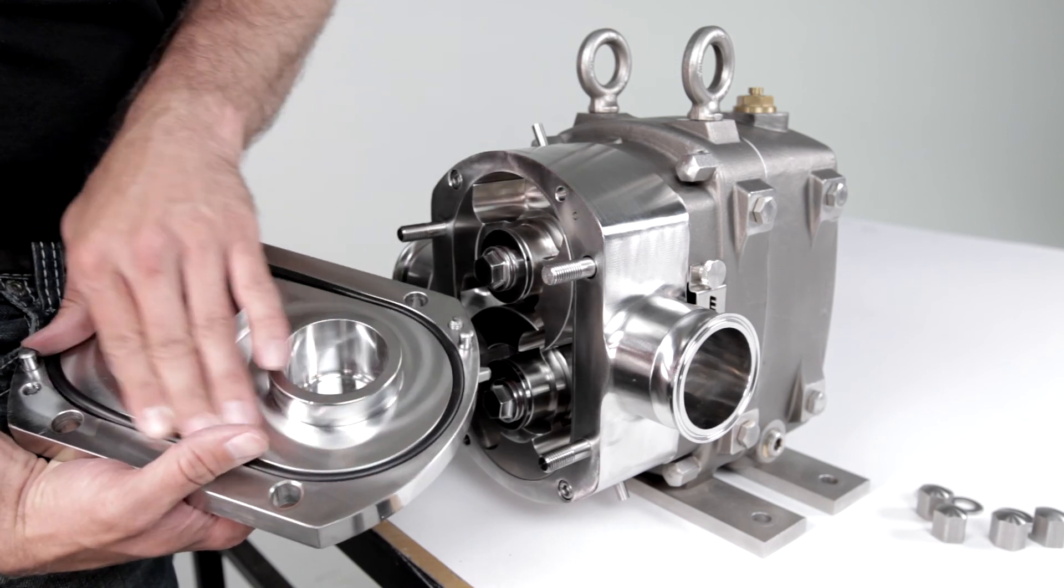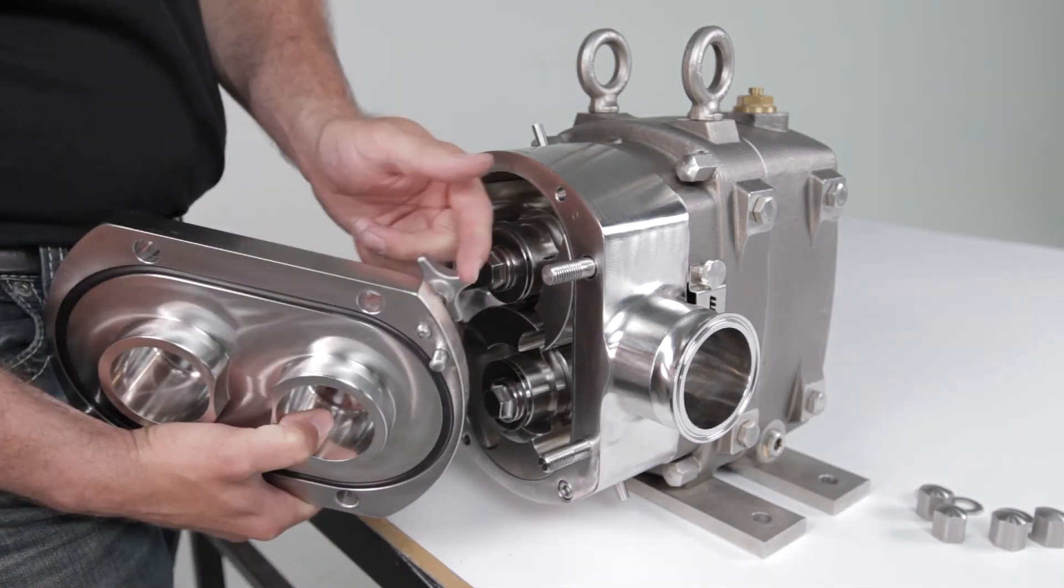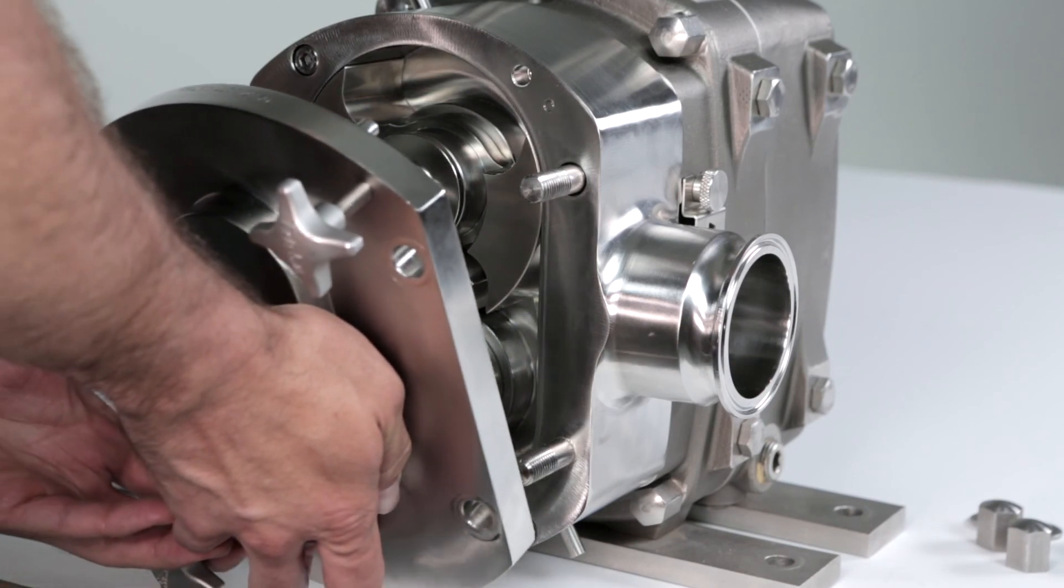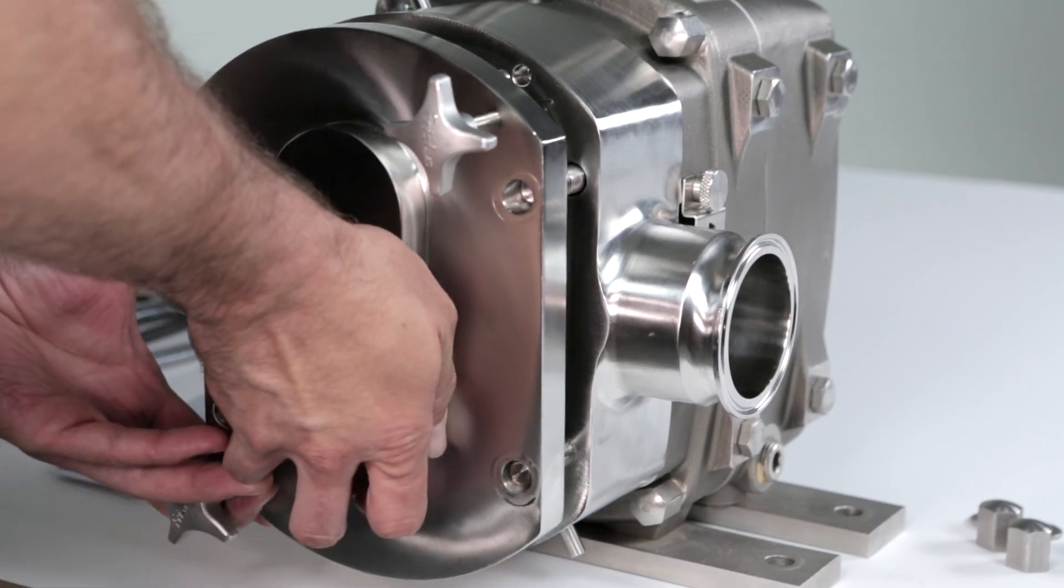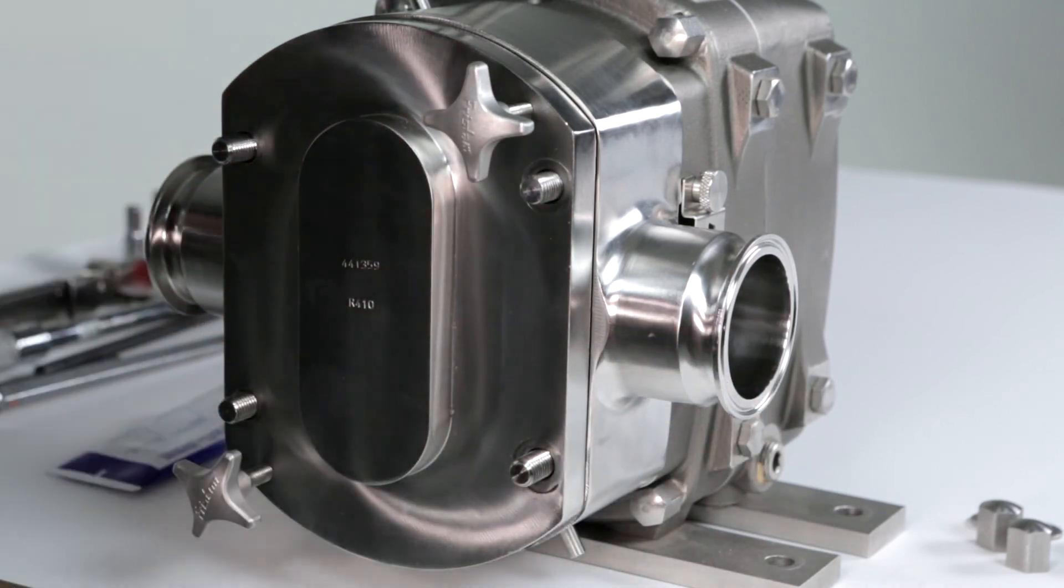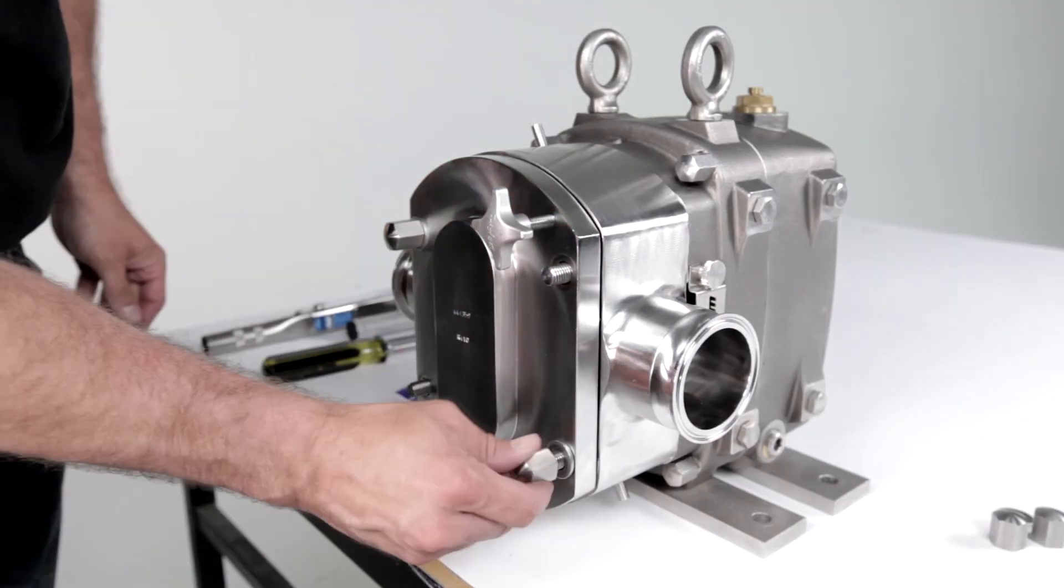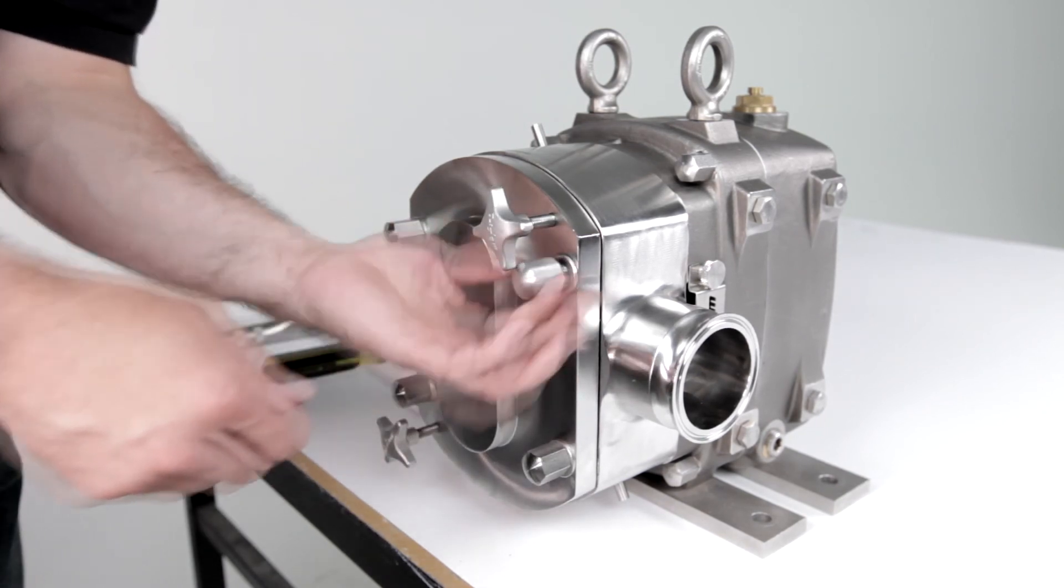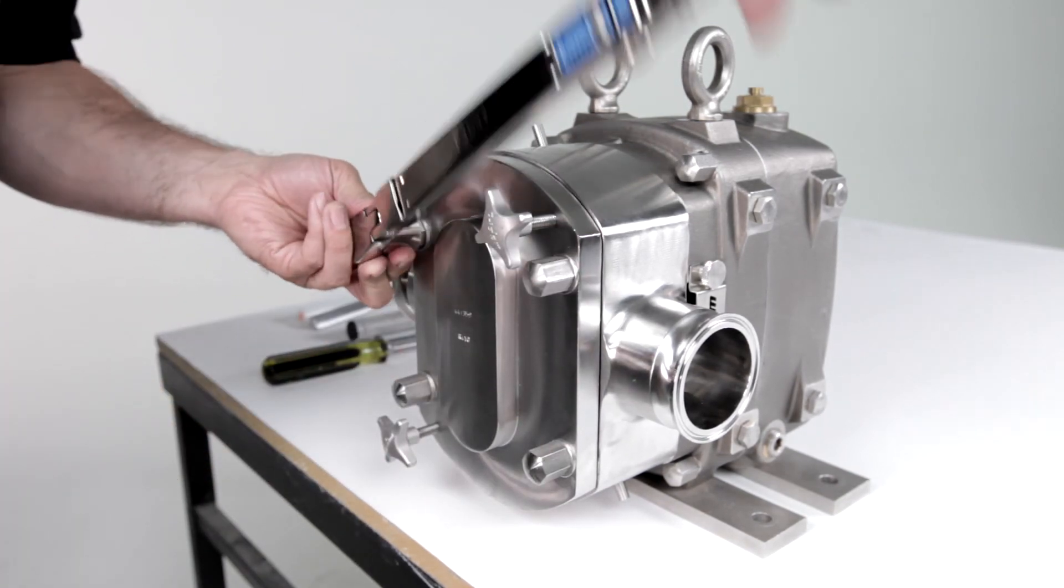Install the cover o-ring onto the cover. Ensure that the cover forcing screws are backed out. Carefully slide the cover onto the housing with the serial number facing up to match the position on the housing. Install cover nuts and cover nut washers. Use a torque wrench to tighten the cover nuts.